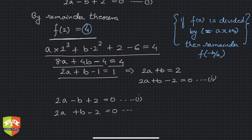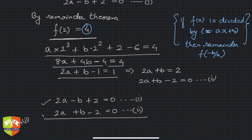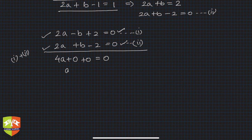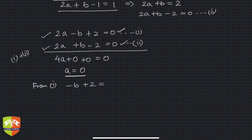Now let's solve the two equations together: Equation 1 is 2a − b + 2 = 0, and Equation 2 is 2a + b − 2 = 0. Adding both equations: 4a = 0, so a = 0. Substituting a = 0 into Equation 1: −b + 2 = 0, giving b = 2.